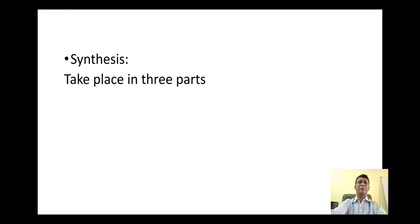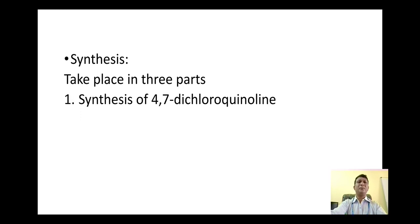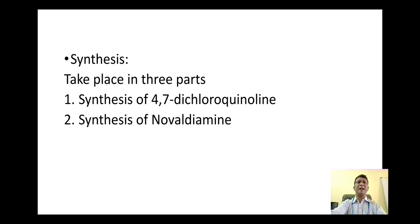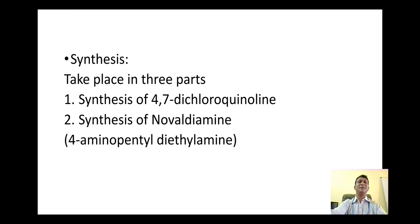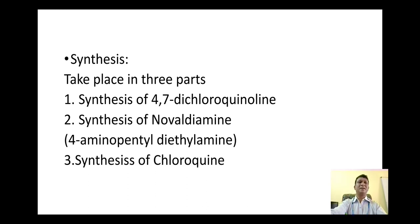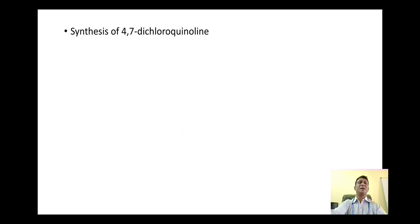The synthesis of chloroquine takes place in three parts. The first part is synthesis of 4,7-dichloroquinoline. The second part is synthesis of novaldiamine, which is chemically 4-aminopentyl diethylamine. The last part is the synthesis of the title compound chloroquine by combination of 4,7-dichloroquinoline and novaldiamine.